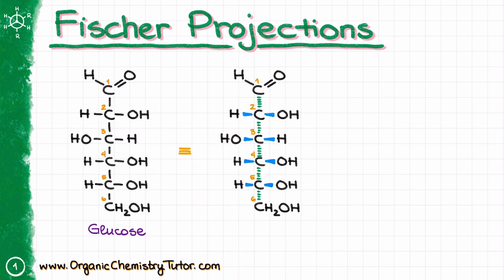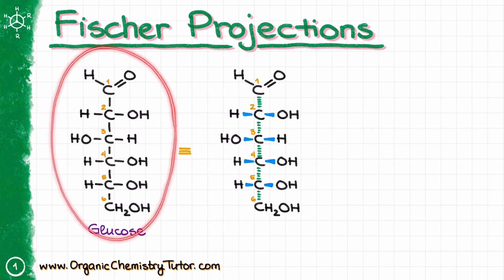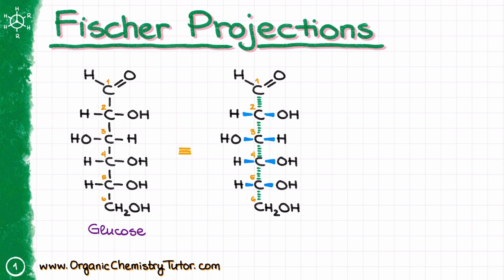First of all, what exactly is the Fischer projection? A Fischer projection is traditionally a vertical chain of atoms with the groups sitting on it like beads on a string. In the Fischer projection, we always look at our vertical lines as if they are going away from us, and our horizontal lines as if they are coming towards us. Sometimes those structures are called bowtie structures because it looks like every carbon on the structure is wearing a little cute bowtie.